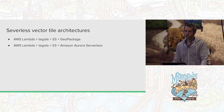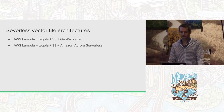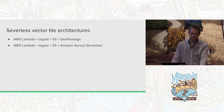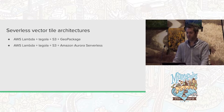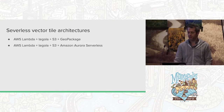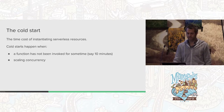I'm going to talk about two primary architectures today. The first one is using Lambda with Tegela, S3, and GeoPackage. The next one will be very similar but we'll explore Amazon Aurora Serverless Postgres.